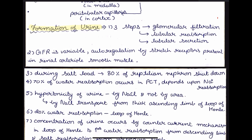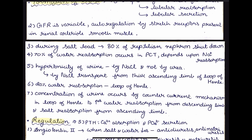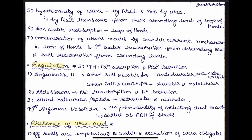The formation of urine is very similar to mammals, with three steps: glomerular filtration, tubular reabsorption, and tubular secretion. The glomerular filtration rate is variable, and autoregulation by stretch receptors is present in the renal arteriole smooth muscle during salt load. Whenever there is increased concentration of electrolytes in blood, 80% of reptilian nephrons shut down and 70% of water reabsorption occurs in the PCT, depending on sodium reabsorption. Hypertonicity of urine is maintained by NaCl transport from the thick ascending limb of the loop of Henle, and concentration of urine occurs by the countercurrent mechanism, similar to mammals — occurring only in the medulla in mammalian-type nephrons.